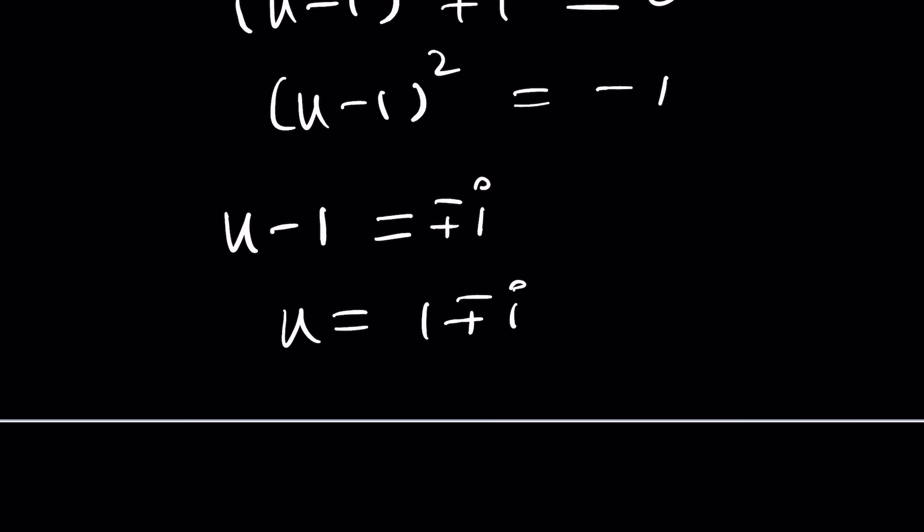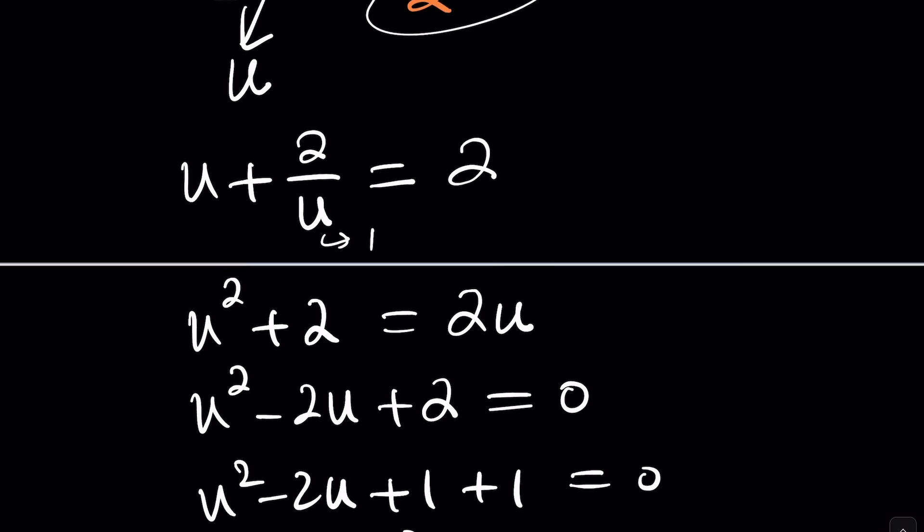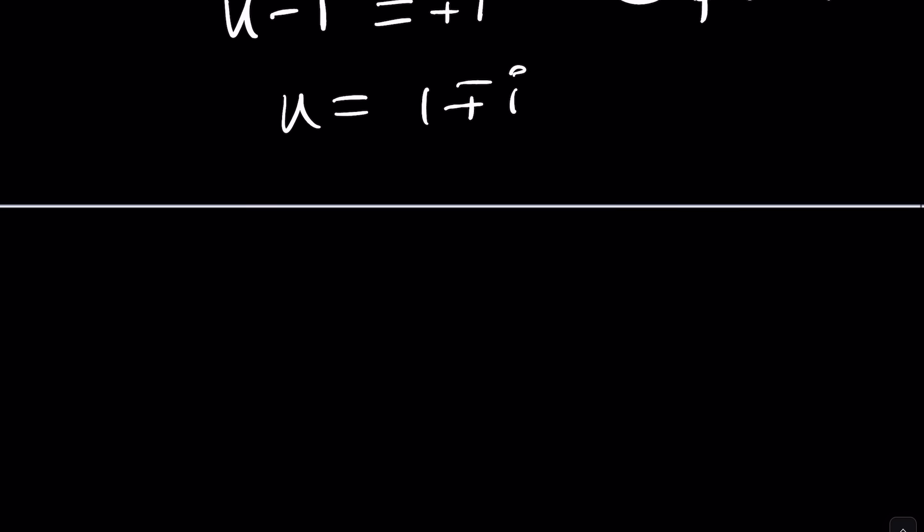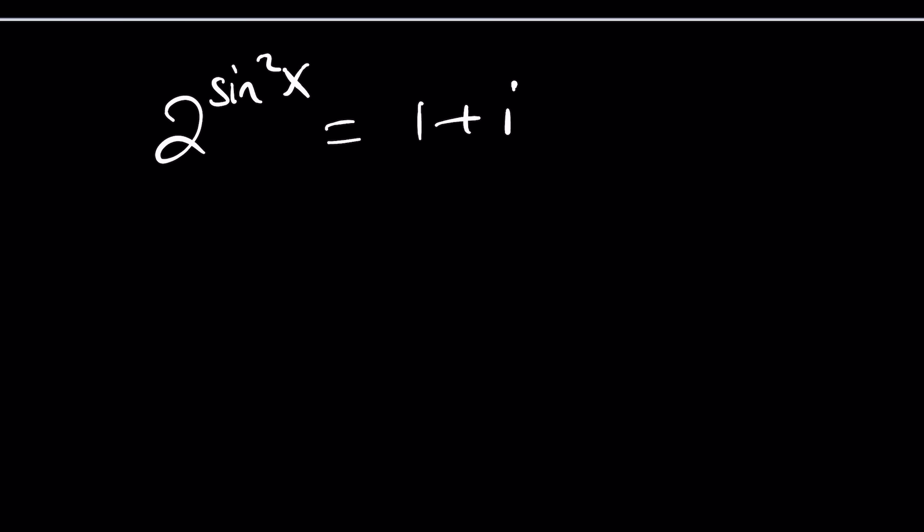By the way, if you like complex numbers, go ahead and check out a plus bi, another channel of mine, which focuses on complex numbers and asks a lot of questions. All right. Now, u is equal to 1 plus minus i. But what is u? Who are u? u is 2 to the power sine squared. So we're going to now set u equal to this. Let's just do it with one of them. And what is that supposed to mean?